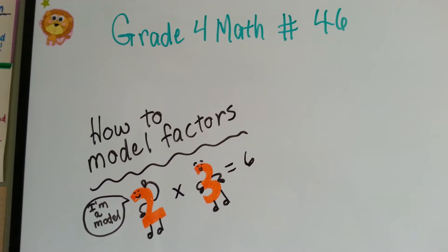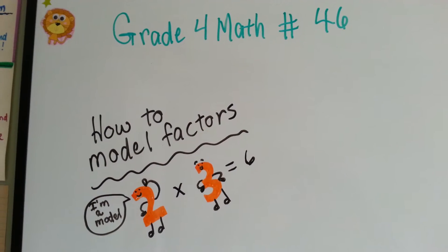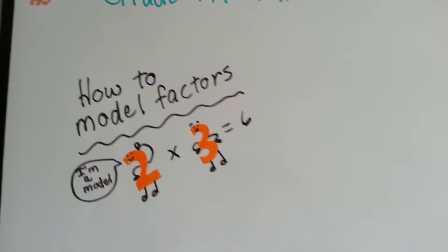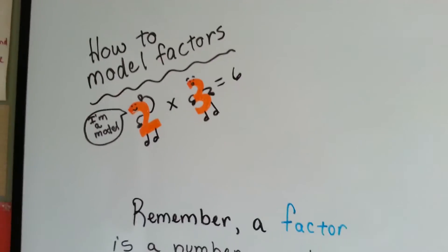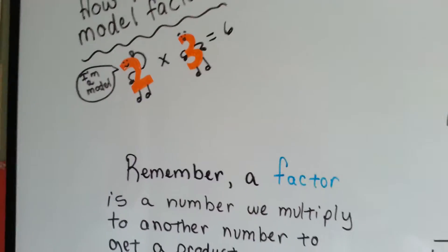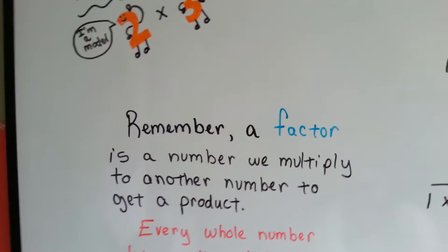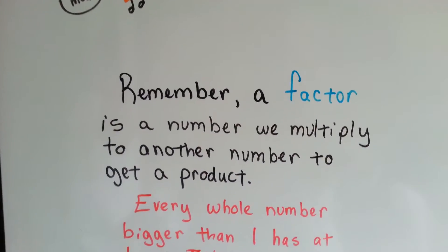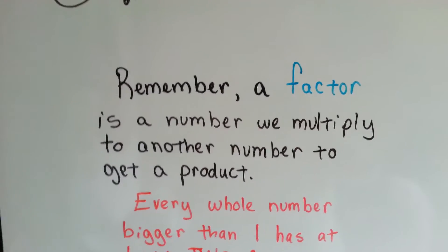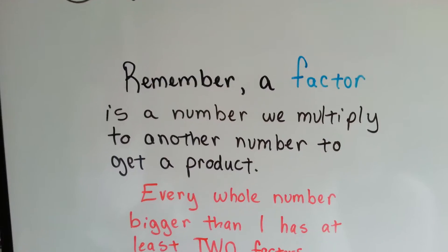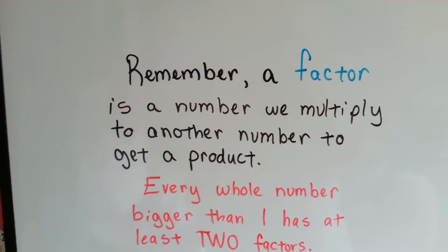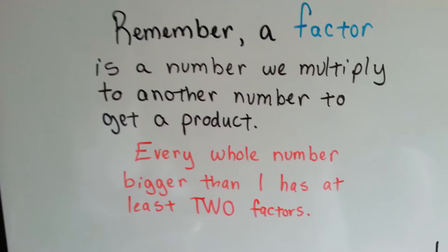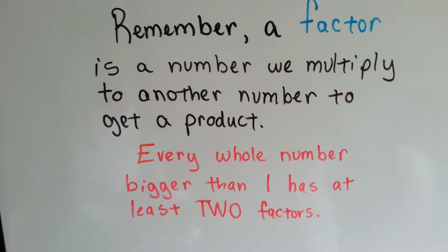Grade 4 math number 46 - how to model factors. We can model factors. So remember, a factor is a number that we multiply to another number to get a product. It's one of the two numbers we multiply together to get the answer in a times table problem.